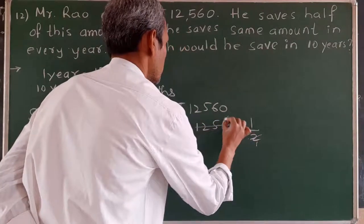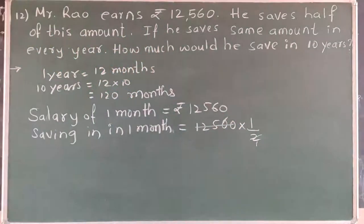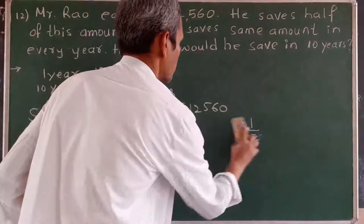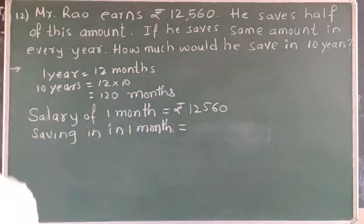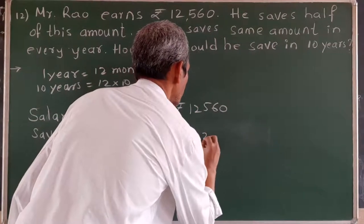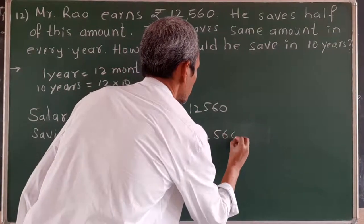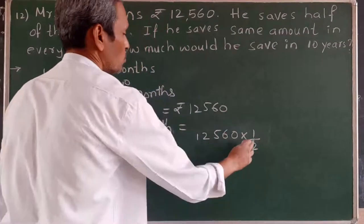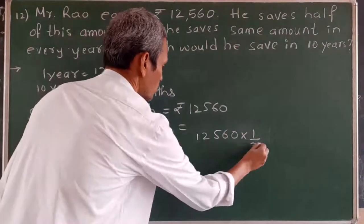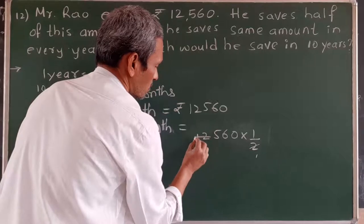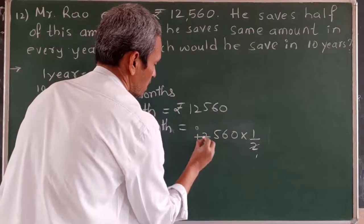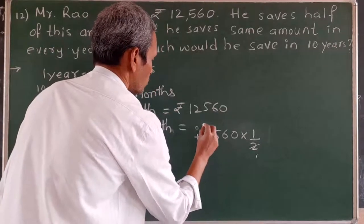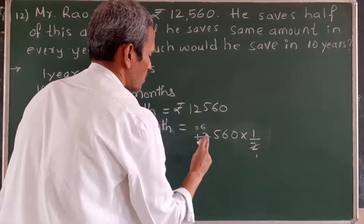We will perform the division: 12,560 divided by 2. Starting from the left: 1 divided by 2 — 2 is not in the 1 times table, so write 0. Take the next digit, making it 12. Two 6s are 12, so 12 minus 12 is 0. Then 5: two 2s are 4, 5 minus 4 is 1 remainder. Bring down 6, making 16. Two 8s are 16, so 16 minus 16 is 0. Finally bring down 0.